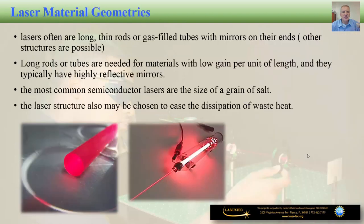Laser cavity materials can come in different forms and shapes. Very often laser cavities are made in the shape of long thin rods or gas-filled tubes with mirrors on each end, although there are also newer disc lasers where the lasing material is shaped as a disc. Long rods or tubes are needed for materials with low gain per unit of length and typically have highly reflective mirrors. On the other hand, semiconductor lasers are very small — the lasing cavity can be as small as a grain of salt. The laser structure can also be chosen to ease the dissipation of waste heat, requiring some sort of cooling structure for proper operation.